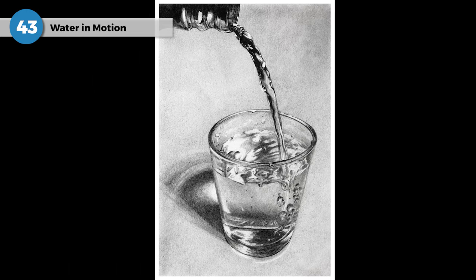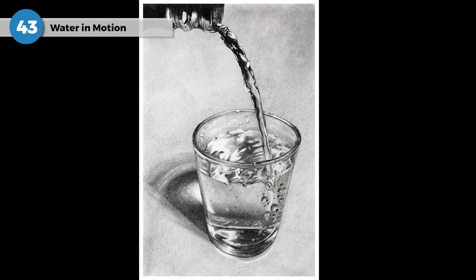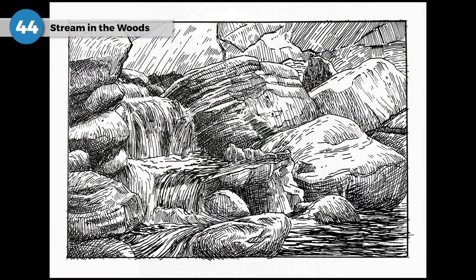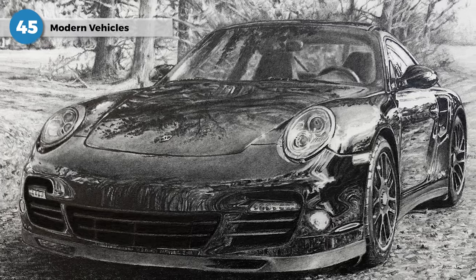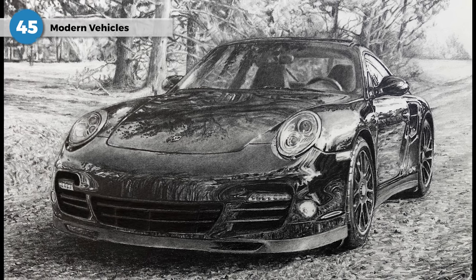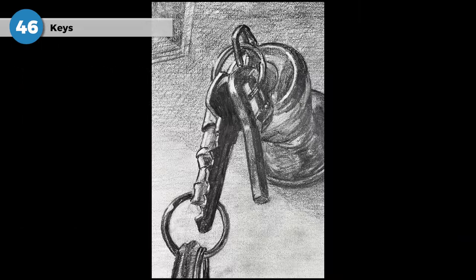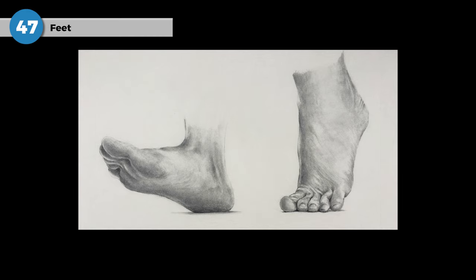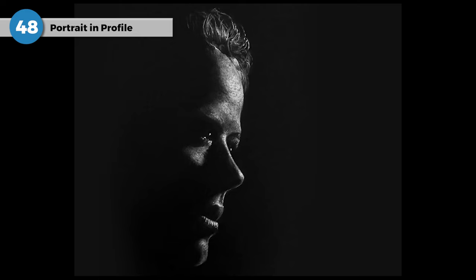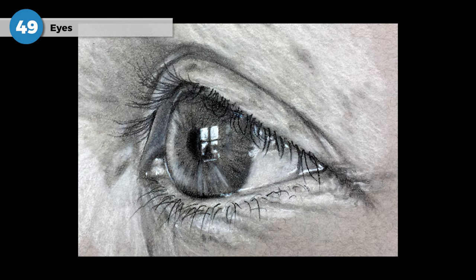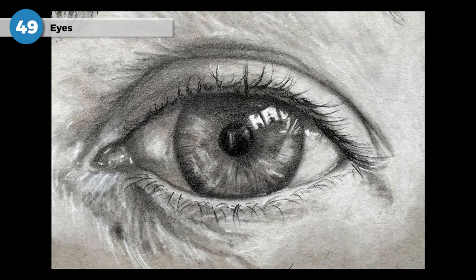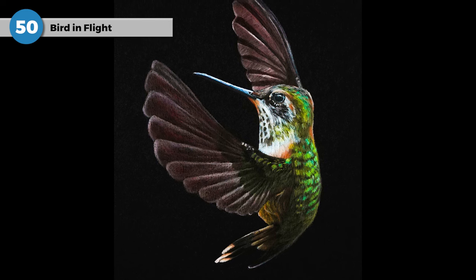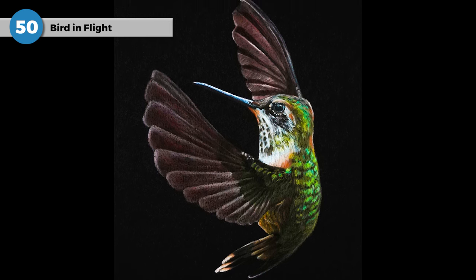How about drawing water coming from a faucet or any other container — a moving subject is always an excellent challenge. How about a creek in the woods? Be sure to include the surrounding elements like a grassy bank. You could also draw any object that moves: cars, motorcycles, planes. We already mentioned an old car, but how about a new car? And speaking of cars, how about a set of keys? The subject may seem easy, but it's more complex than you think. How about drawing things at the end of your legs — your feet? How about a face in profile? Drawing a face from the side is a little more difficult than sketching one from straight on. And don't forget your eyes — try getting a mirror out and drawing your eyes from observation. Or how about drawing a bird in flight? Another moving subject — you might want to use a photo reference for this one.